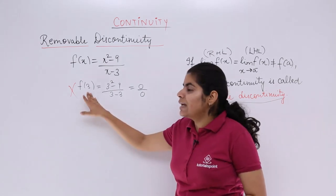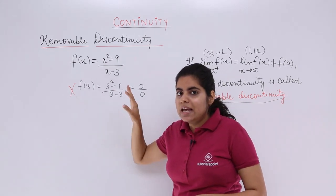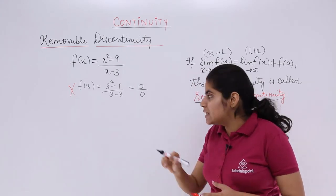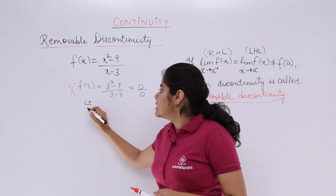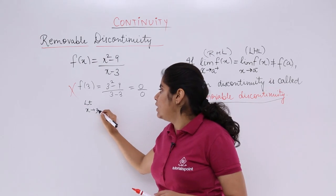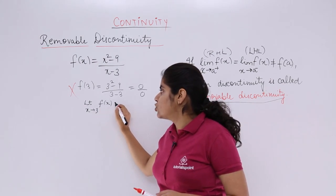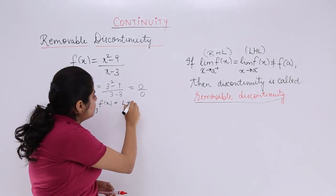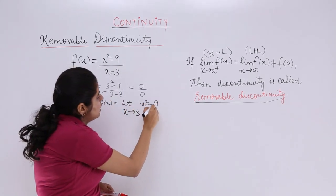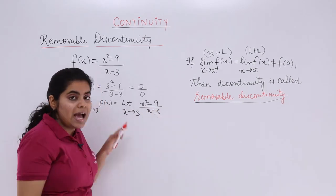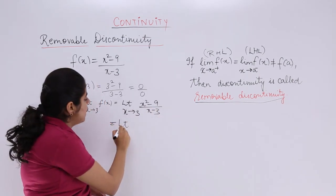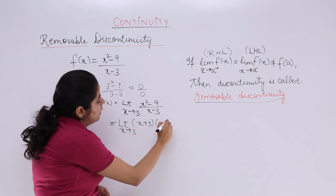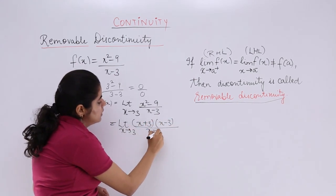But when this thing happens, I say that I can always solve it with the help of limits. When I solve with the help of limits, say limit x tends to 3 and I have the function. What happened? I said that limit x tends to 3, the function is x² - 9 upon x - 3. I used to factorize it. This I have done in the previous videos: (x + 3)(x - 3) upon x - 3, right?